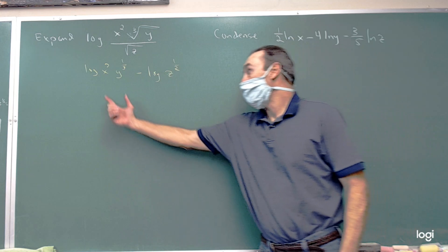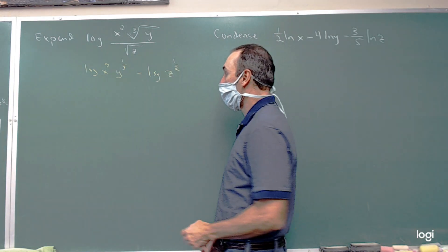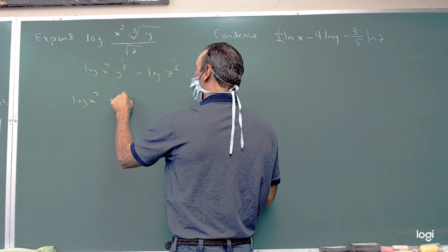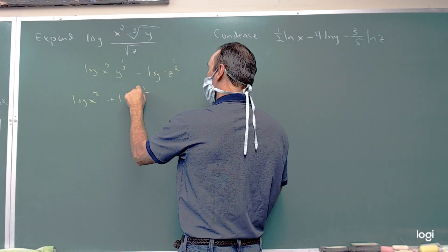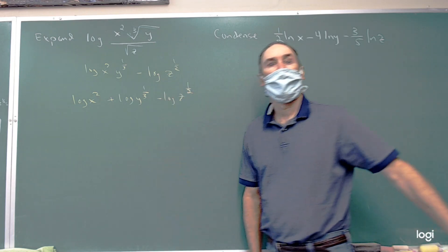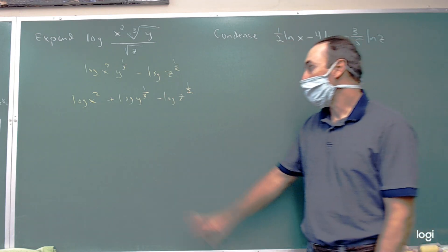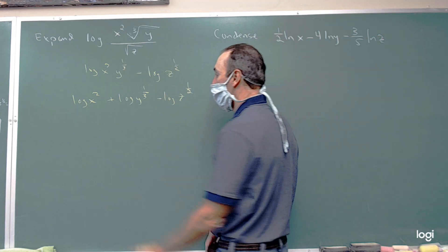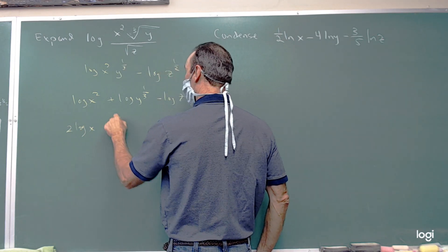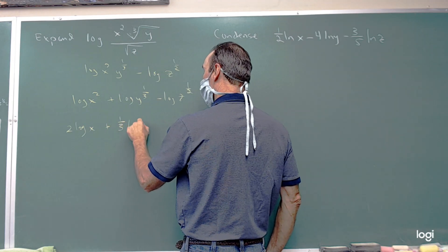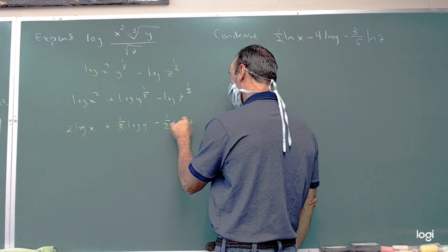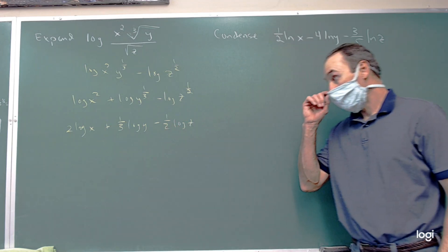The logarithm of a multiplication we can split up into the sum of the logarithms, so it's going to become this. Then we can use that third property of logarithms and bring the exponents out in front, and this is where we're trying to get. So this is our expansion, where we have pulled that apart as much as we can.